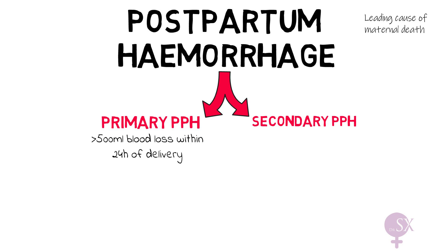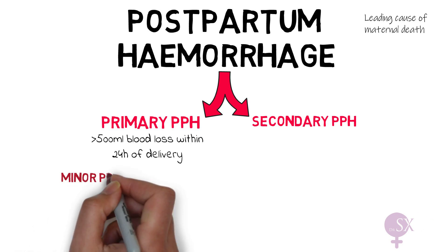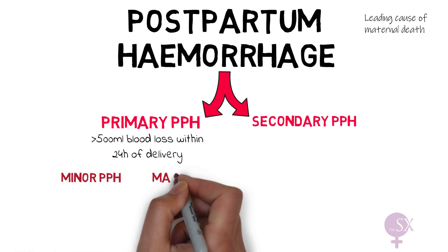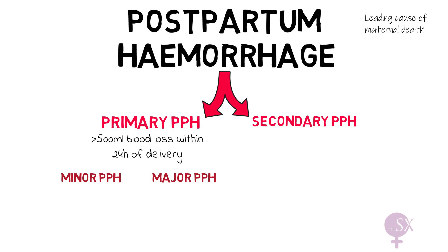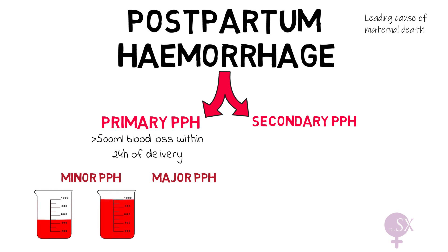Primary PPH can be divided into minor and major PPH. Minor PPH refers to a blood loss of 500 to 1000 mls, while major PPH refers to a blood loss of more than one liter.